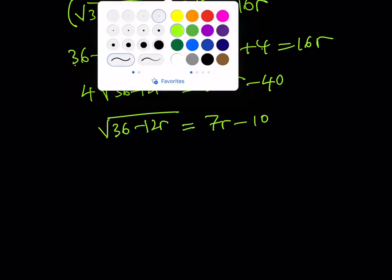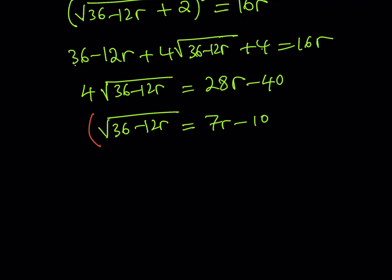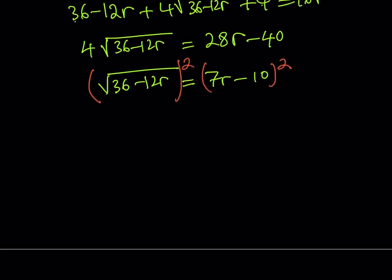Now since we have a radical, let's go ahead and square both sides of this. That's our general strategy for solving radical equations, but with radicals, remember, we always have to go back and check our work, because some solutions may not be in the domain. So this squared is equal to this squared, which is 49r squared minus 7 times 10 is 70. Double that, r plus 100. Awesome.